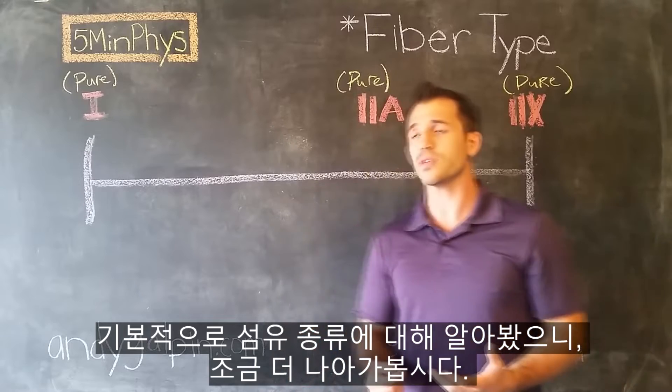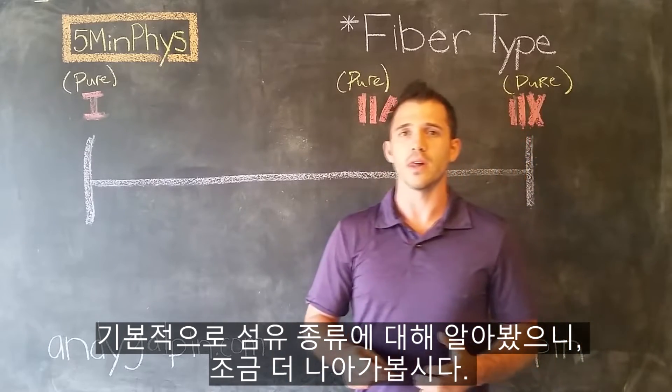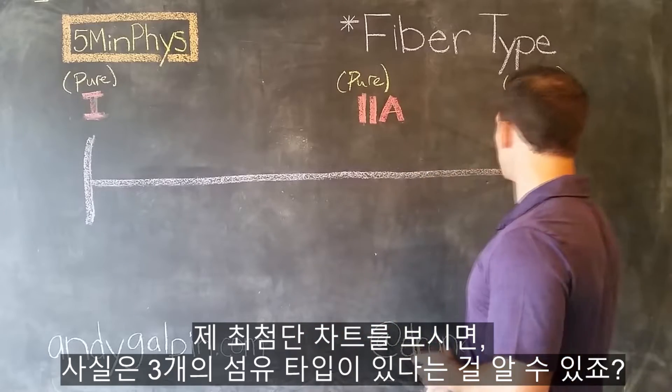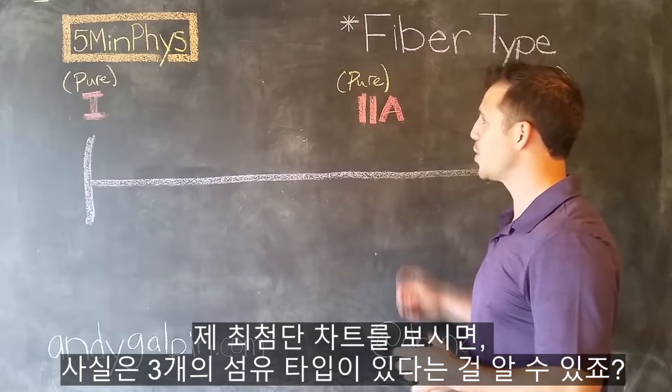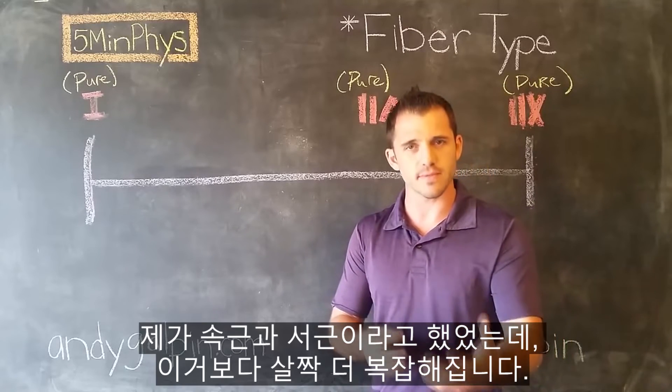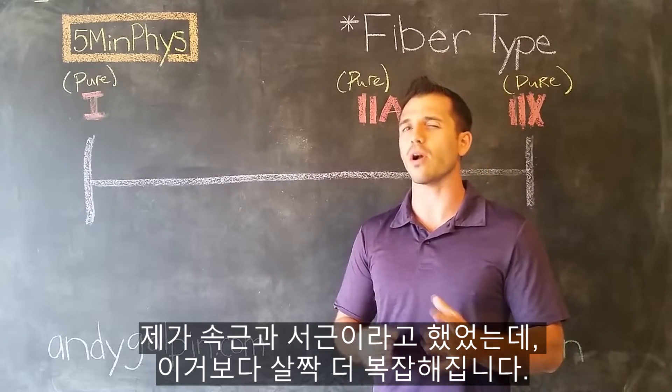So we have a basic understanding what muscle fiber types are, but let's expand on that a little bit more. What we can see actually here from my high-tech chart is that there's actually three fiber types. So I said fast twitch and slow twitch, but it gets a little bit more complex than that.